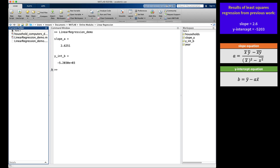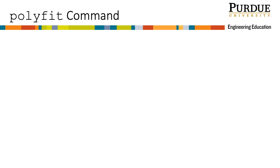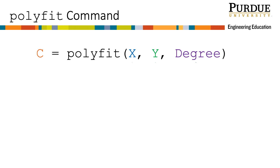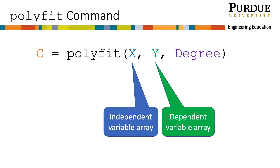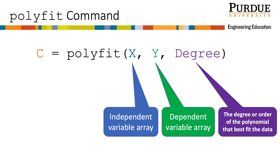That was a lot of tedious algebra to manage in MATLAB. Did you know there is a MATLAB built-in function to do the same thing in one step? To find the coefficients of a polynomial that fits the data using least squares regression in MATLAB, we use the command polyfit. This command requires three input arguments: x the independent variable, y the dependent variable, and the degree or order of the polynomial that will best fit the data. This value should be a whole number.